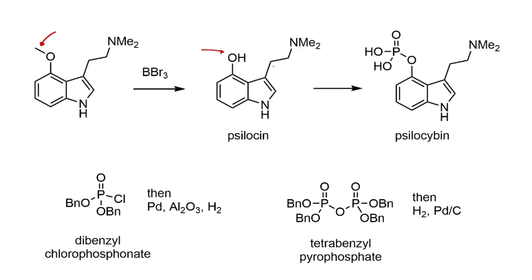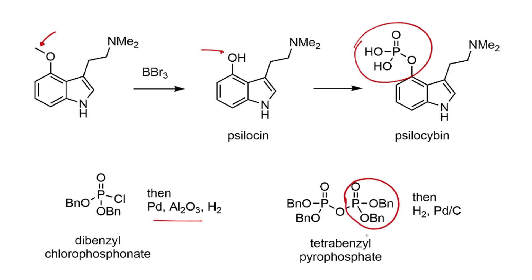Psilocin itself isn't particularly stable towards air or prolonged storage, and there are a couple of ways the phosphate ester of psilocybin might be introduced. A more classical reagent is dibenzyl chlorophosphonate, with the benzyl groups removed by hydrogenation over palladium on alumina. Shulgin mentions in TiHKAL that this gives very low yields in the phosphorylation step and that the reagent itself is unstable and must be handled in solution. More recently, tetrabenzyl pyrophosphate has become available — apparently easier to work with and higher yielding, though less atom-economical since half the molecule is discarded. The benzyl protecting groups are then removed with hydrogen and palladium on carbon to afford psilocybin.